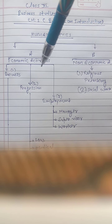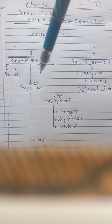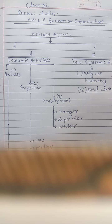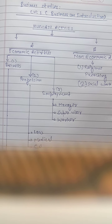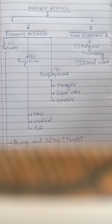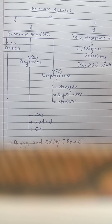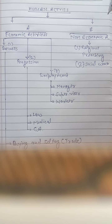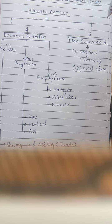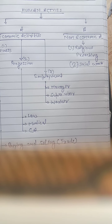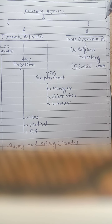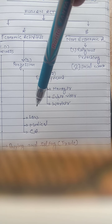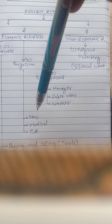Now the second one is profession. In profession, experts are skilled and have specialized knowledge. Professionals like medical doctors require special skill and training to practice their profession.